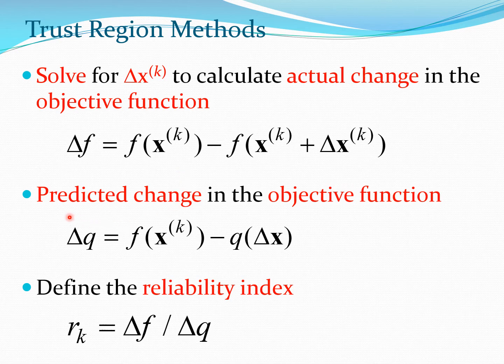Now you compare this delta f with the predicted change in the objective function and the predicted change is going to be delta q which is again the value of f at the point xk minus the value predicted by the quadratic approximation of the function. So again hopefully this should be positive because your approximation should also give you a value which decreases. So now if we divide delta f by delta q we get this factor r of k which is known as the reliability index and this factor essentially is used to determine as to how good the approximation is going to be.